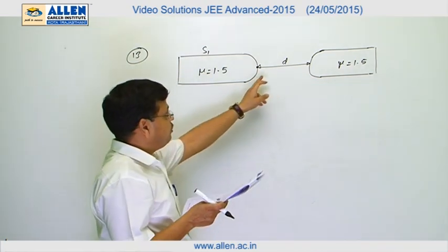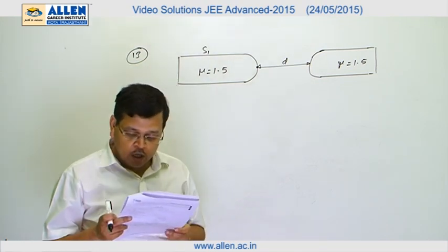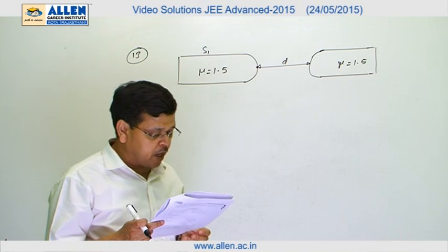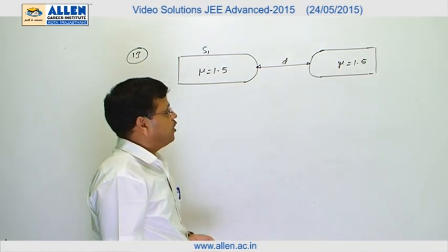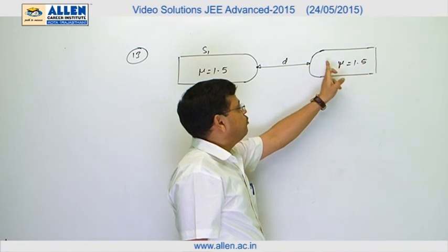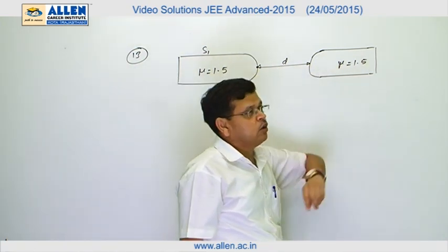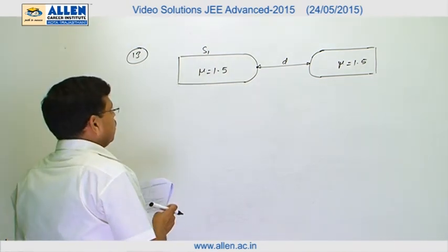We have to find the separation d under the condition that the light rays coming from it are found to be parallel to the axis inside S2. That means, once the light rays go inside this medium, this rod, they become parallel to the axis of the rod.